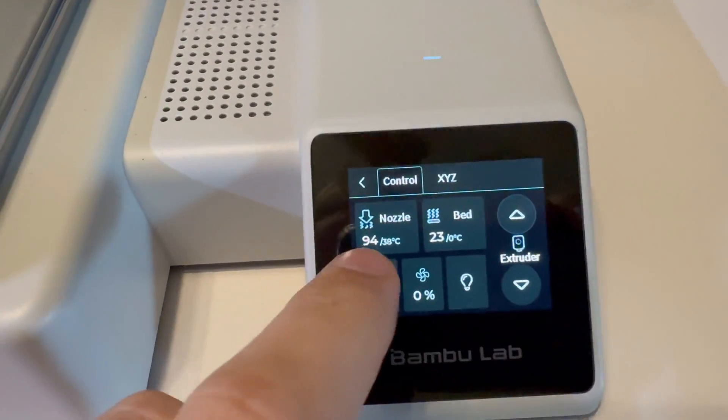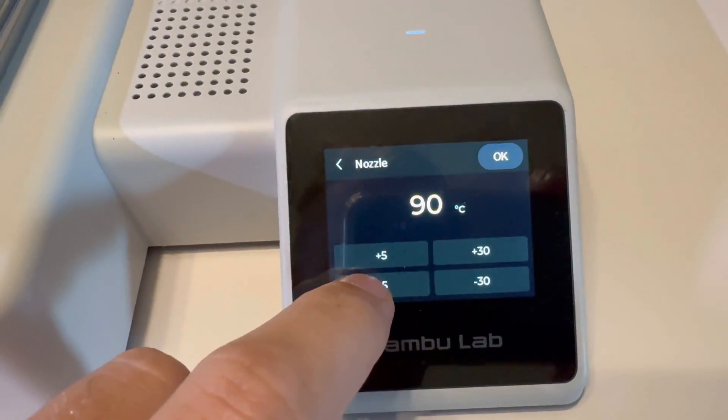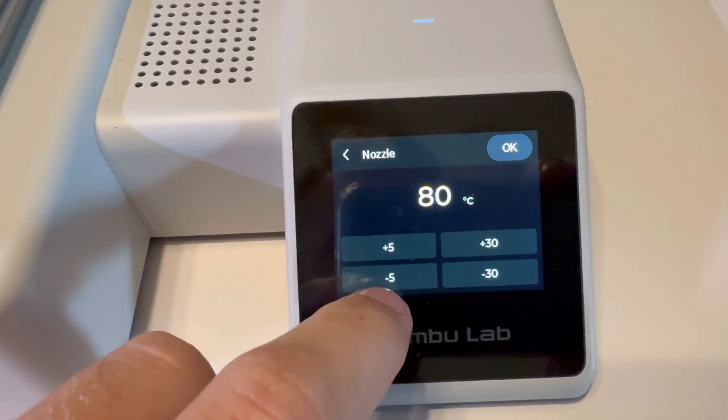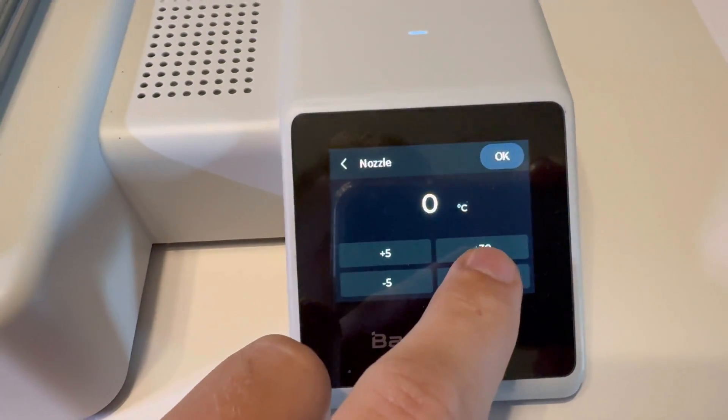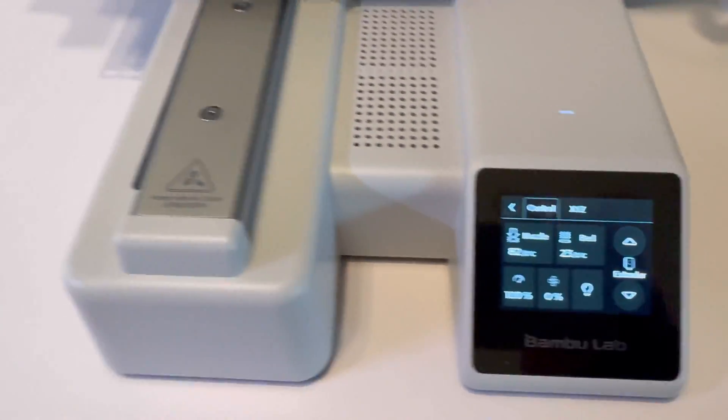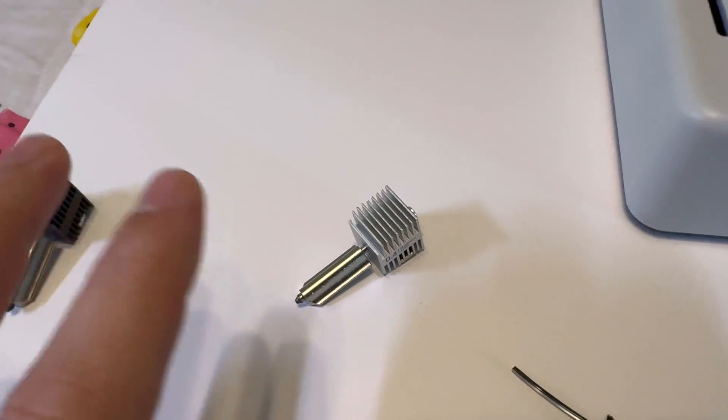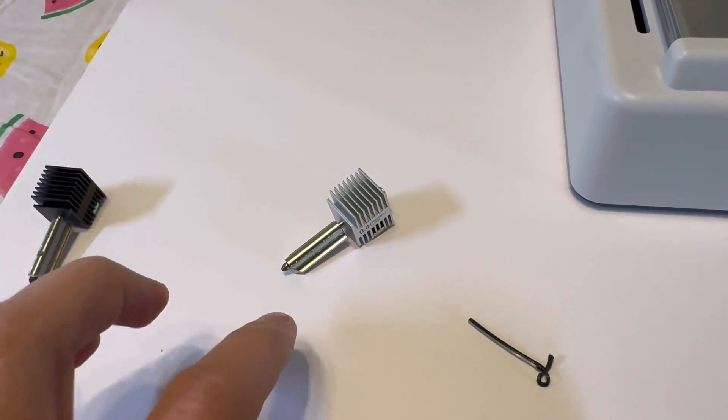Next, what you want to do is turn down the temperature of the nozzle. So let's go back down to 5, negative 30. Go all the way down. Then click OK. Then let everything cool down. Set your nozzle somewhere where it's not going to melt away because it's going to be extremely hot.